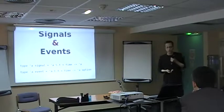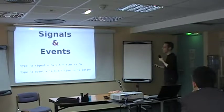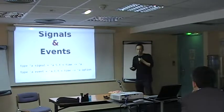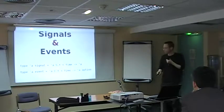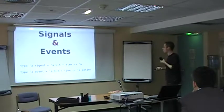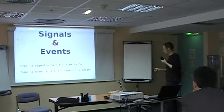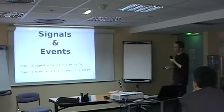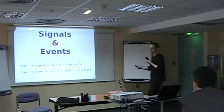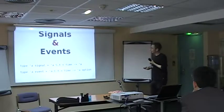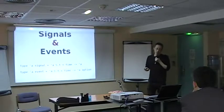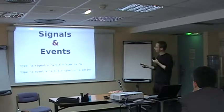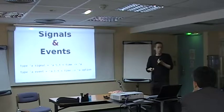And more generally, anything that has state, anything that you would put in a reference cell, is a good candidate to become a signal. So a signal, you can see that, you can understand it, and that's the way you should understand what a signal is, as a function from time to values. And whenever you give me the current time, I apply the function, and I give you the current value of the signal.